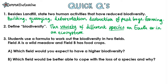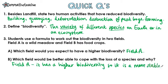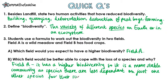Question three: students use a formula to work out the biodiversity in two fields. Field A is a wild meadow and field B has food crops. Which field would you expect to have a higher biodiversity? This would be field A, because it's got wild meadow, there are going to be lots of different wildflowers, whereas field B is a food crop which tends to just be one type of crop, so it would have a really low biodiversity. And part B: which field would be better able to cope with the loss of a species and why? It would be field A, because it has a higher biodiversity, so it has a more stable community, as species there are less dependent on just one other species for their survival.